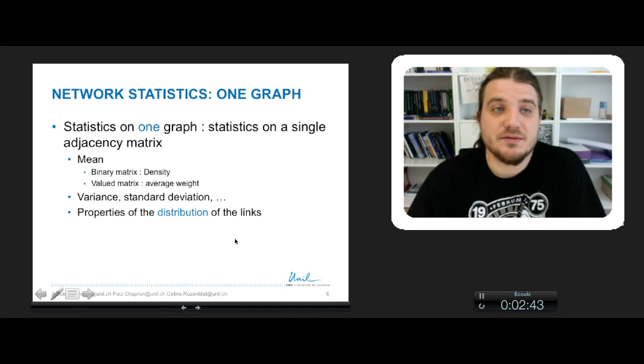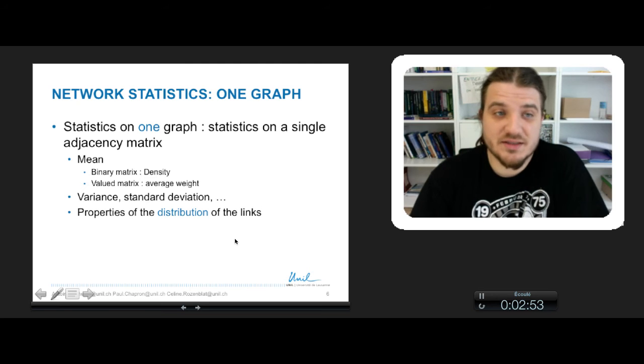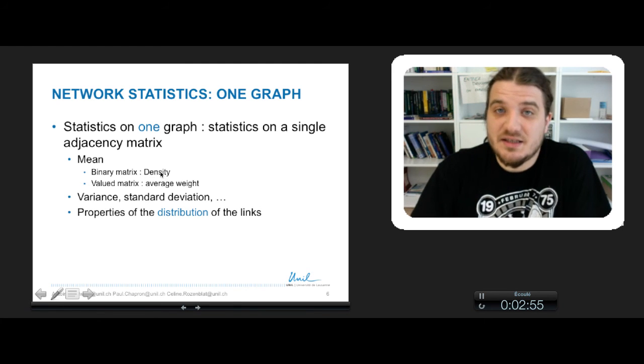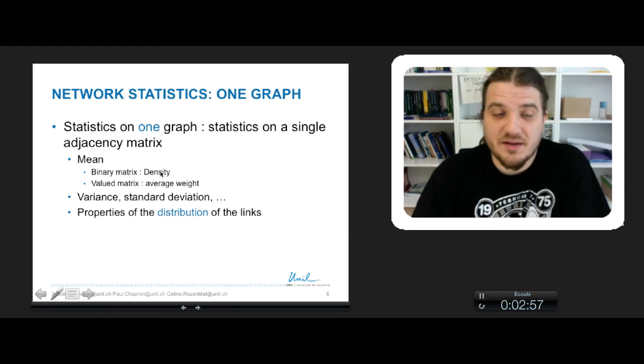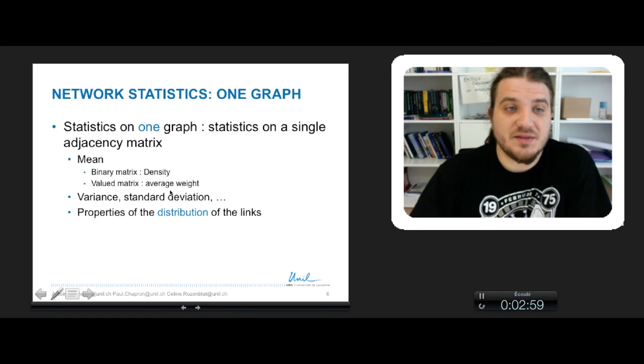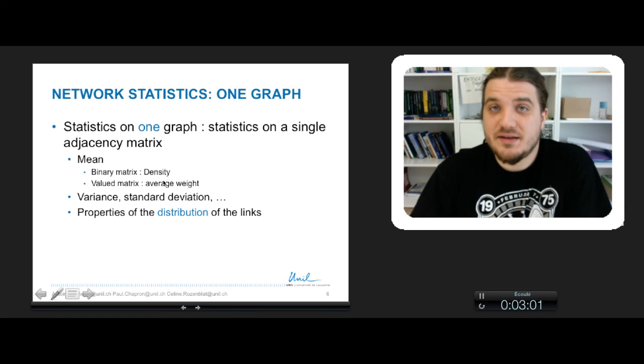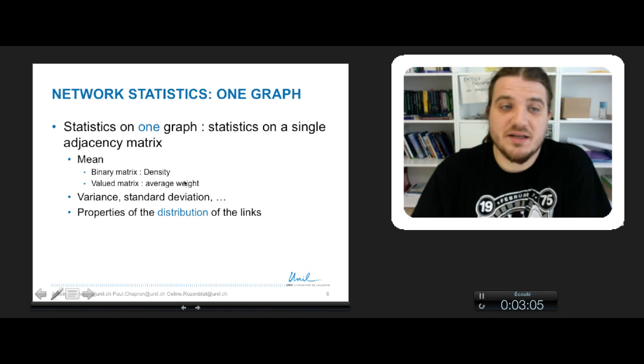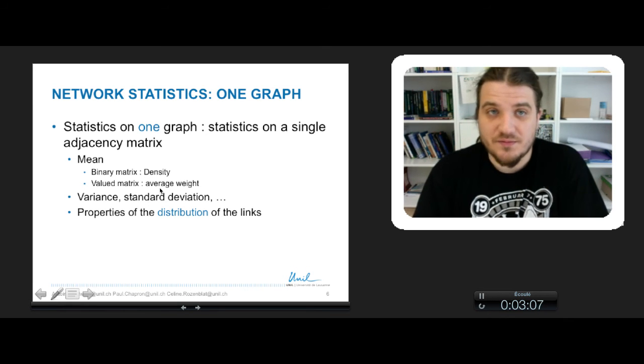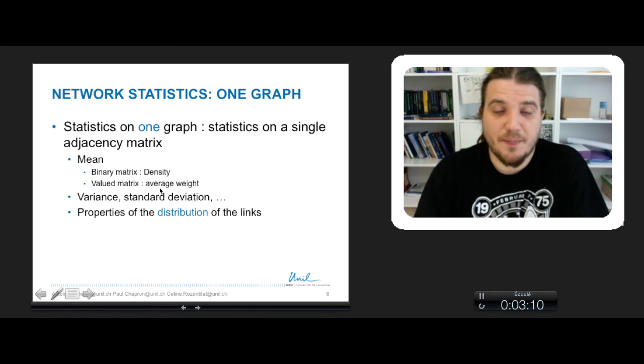Few words on network statistics. So when you've got only one graph, the only statistics you can do is about the distribution of links. So you can take the mean of the adjacency matrix. You will have the density of links, which is a kind of mean of the adjacency matrix. When you've got weighted networks, you take the valued matrix and you've got the average weight of the links. You can also compute variance and standard deviation of your links and so on.